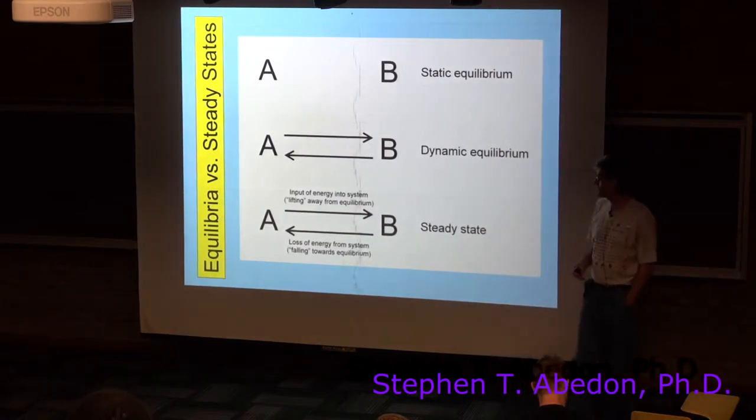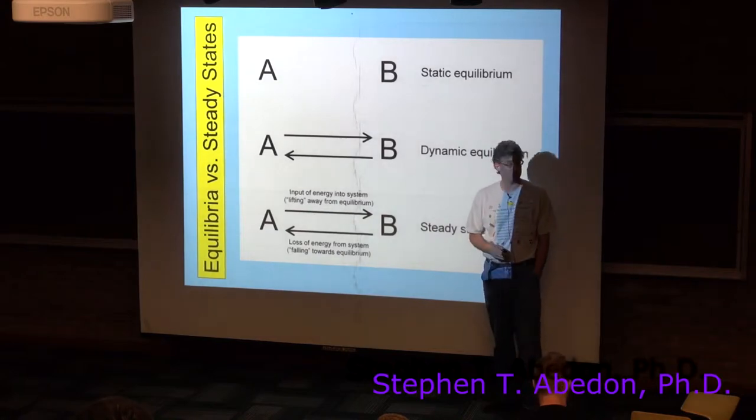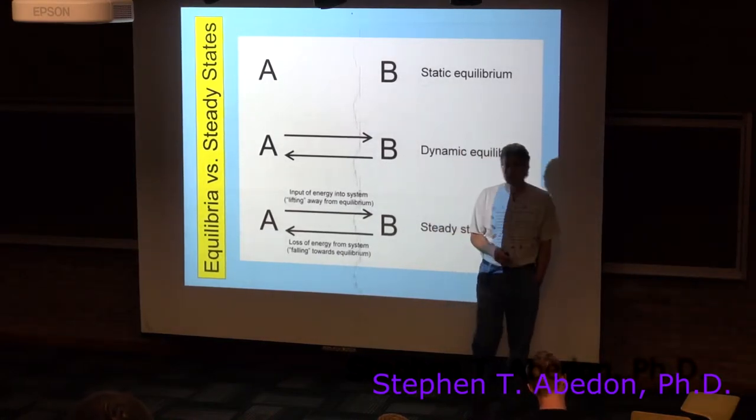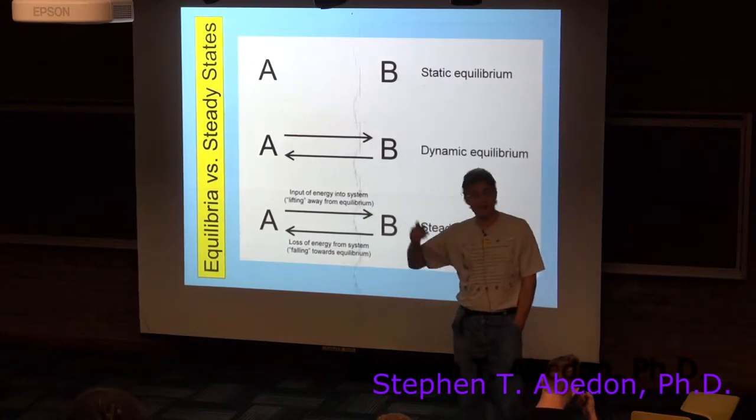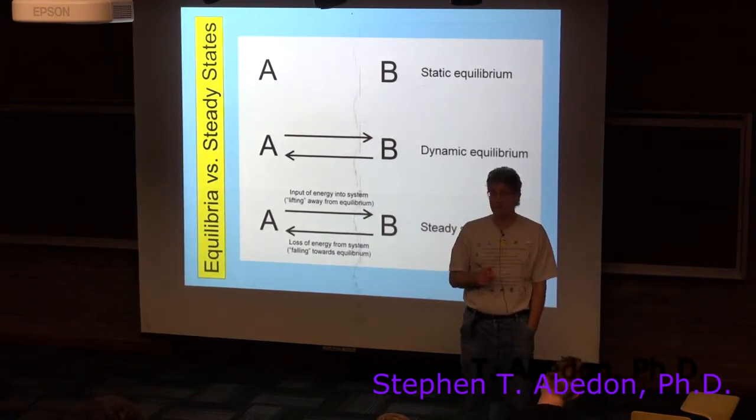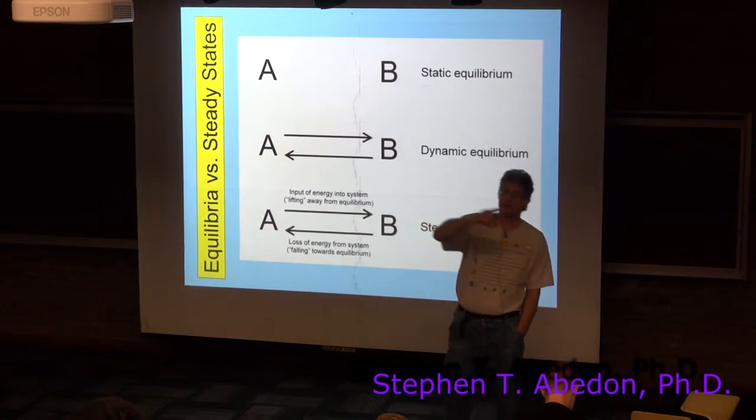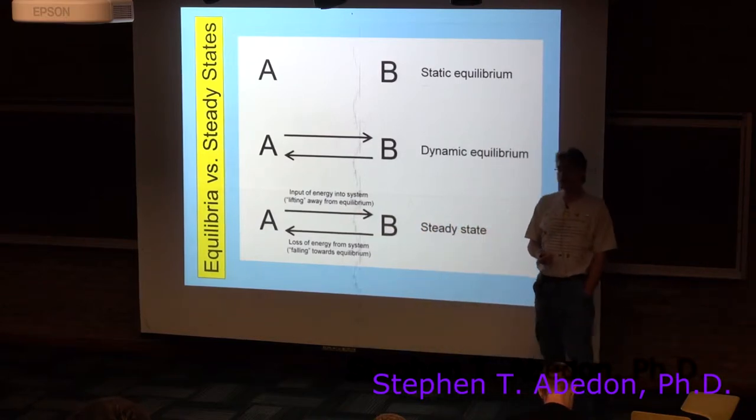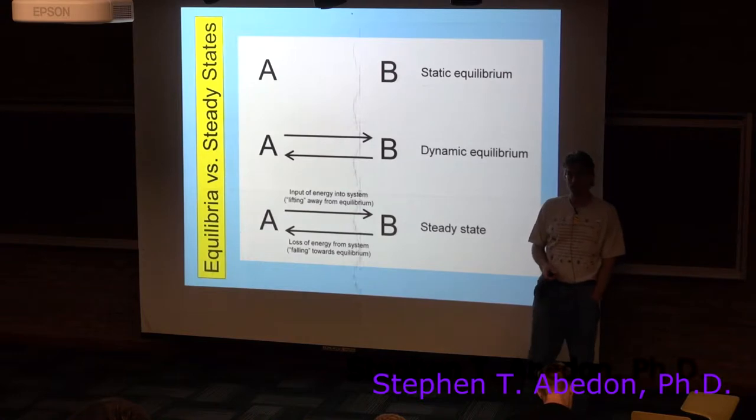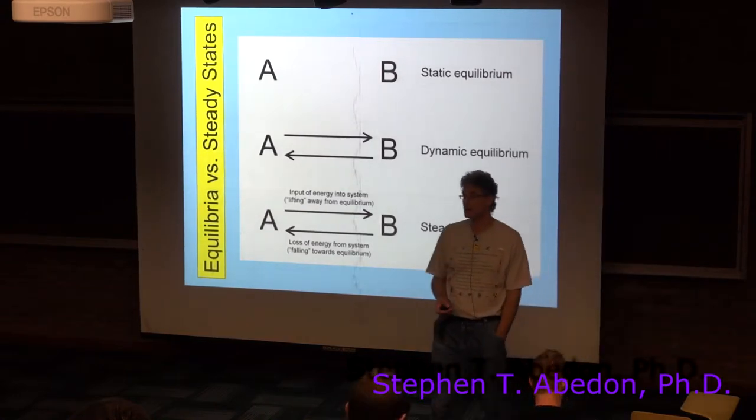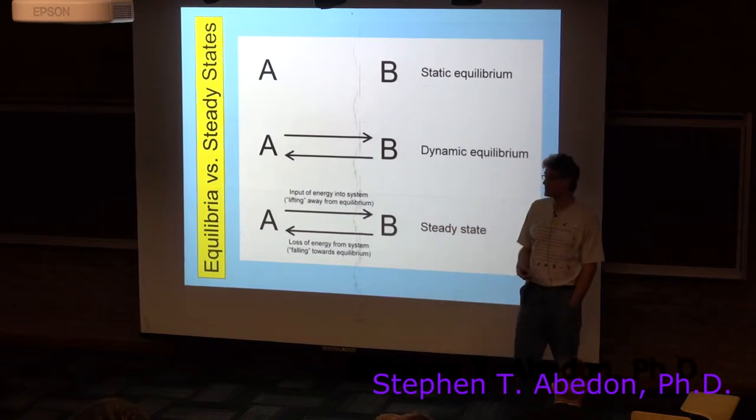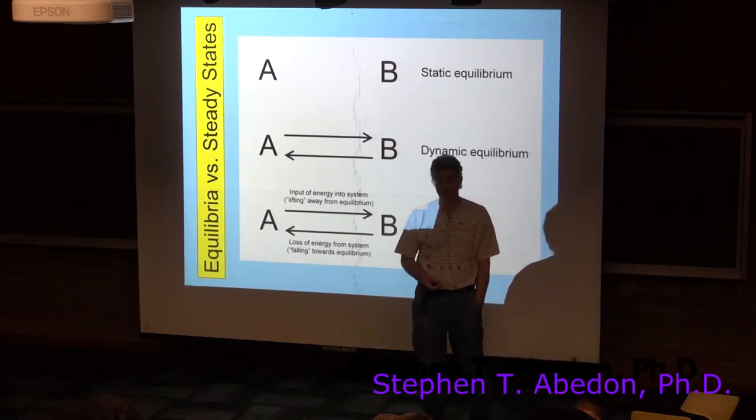The difference between a dynamic equilibrium and a steady state has to do with whether or not energy is required to maintain the system. So in a dynamic equilibrium, what you've got is a system where something is constantly happening. The different chemicals are constantly being shifted from the reactants to the products and back to the products. But overall within the system, there's no change. So the concentration of the reactants and the concentration of the products is remaining the same, despite the fact that reactants are constantly converted into products and back again.